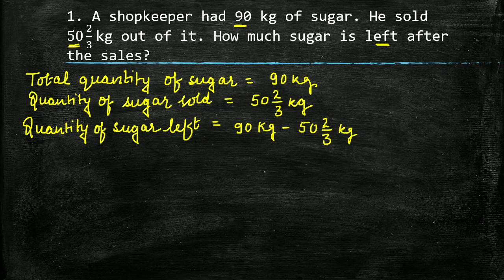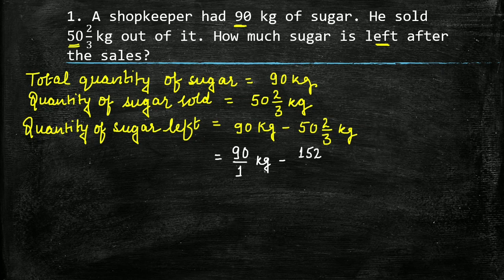First, we have to convert this mixed fraction into an improper fraction. So 90 kg can be written as 90 upon 1 kg. Minus: 3 into 50 is 150 plus 2, that is 152 upon 3 kg.